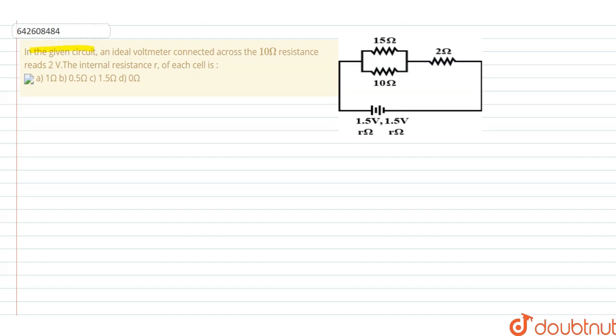in the given diagram circuit, an ideal voltmeter connected across 10 ohm resistance reads 2 volt. Now we need to find the internal resistance r of each of the cell of the given battery. So in this question we can see